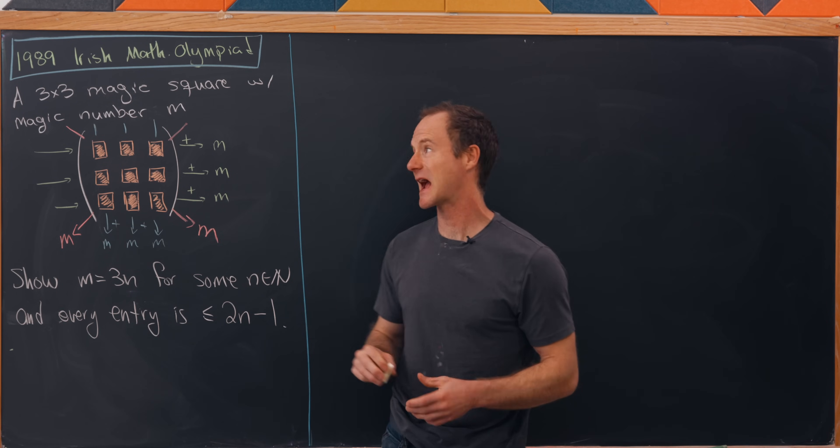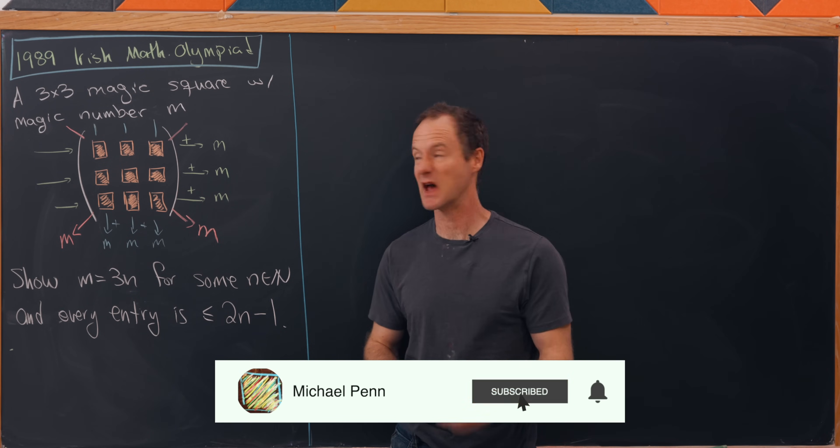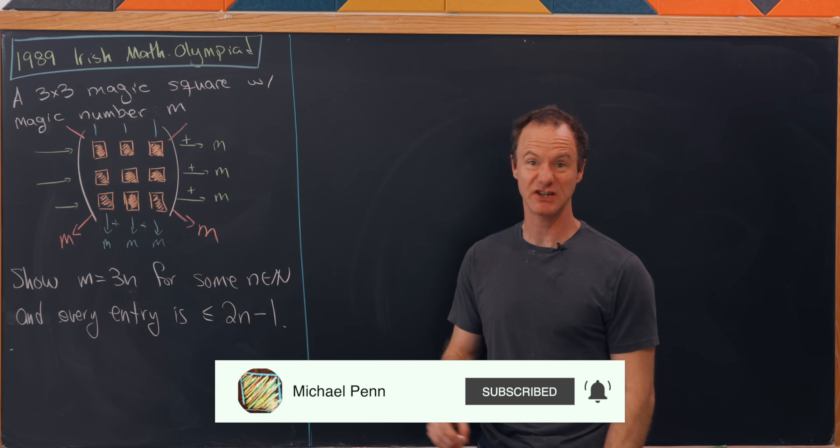Today I've got a nice little snack of a problem that comes from the 1989 Irish Math Olympiad and it concerns magic squares.